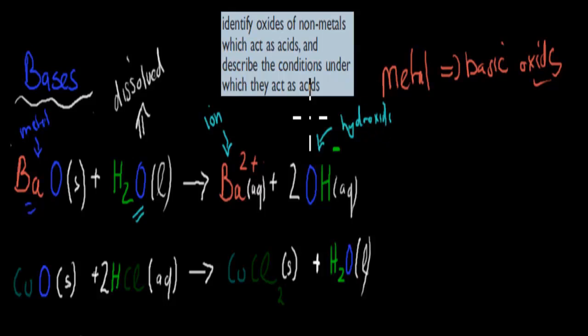This hydroxide group makes things basic. The reason it's done this is because here we have the barium which has lost electrons.